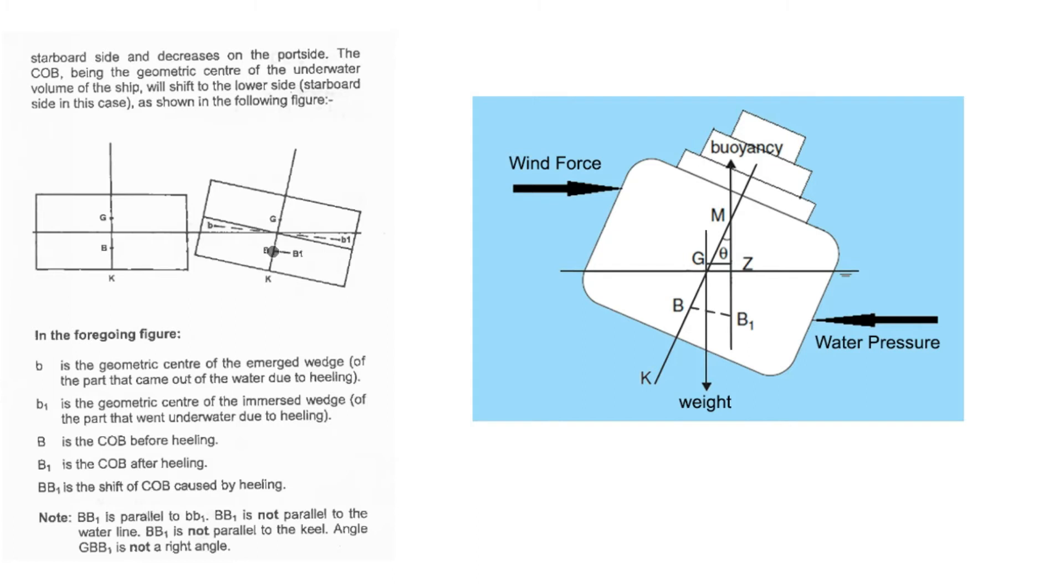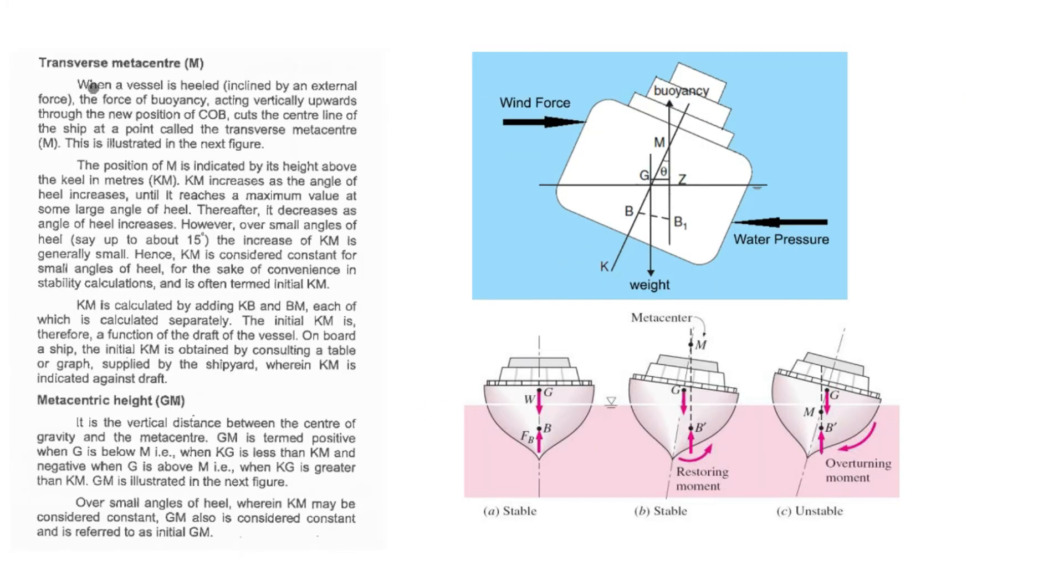And G means center of gravity. Now coming to transverse metacenter. So basically transverse metacenter is when the original center of buoyancy shifts to a new center of buoyancy, the upward force from this new center of buoyancy and the vessel's center line will cut at the transverse metacenter. So basically KM is calculated. KM's value will increase until the vessel heels. But if the vessel heels more, then KM's value will decrease. Basically for small angle, KM's value will be constant.